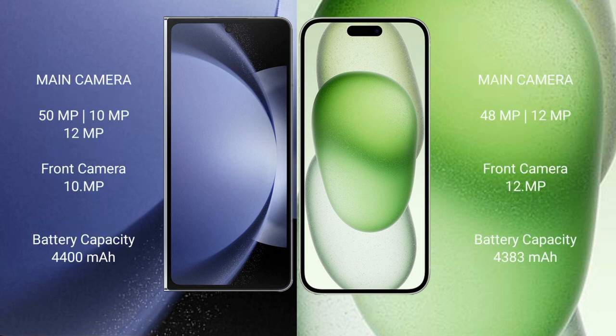Samsung Galaxy Z Fold 6 features a triple rear camera setup: 50MP plus 10MP plus 12MP, with a 10MP front camera. iPhone 15 Plus features a dual rear camera setup: 48MP plus 12MP, with a 12MP front camera.